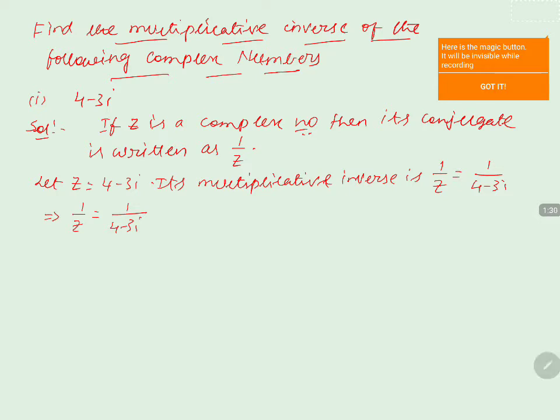Now when we take the conjugate, we have to change the symbol for the imaginary part, that is 4 plus 3i. With 4 plus 3i, we will multiply and divide. Then the numerator will be in the form of 1 into 4 plus 3i, which can be written as 4 plus 3i by...